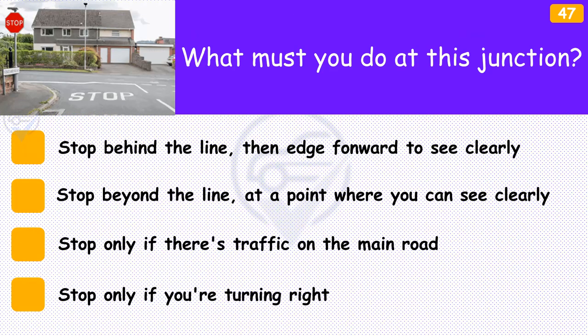What must you do at this junction? The answer is 'Stop behind the line, then edge forward to see clearly'. The stop sign has been put here because the view into the main road is poor. You must stop because it won't be possible to take proper observation while you're moving.